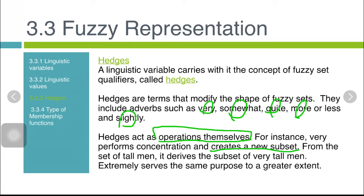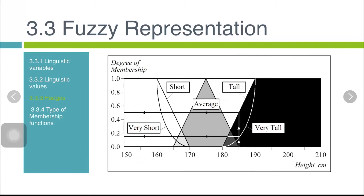From the set of tall men, we take an example. It derived another subset, that is 'very very tall men.' From the previous Figure 2 that we have drawn, we have short, average, and tall. If we consider hedges in the fuzzy concept, then we need to have another subset, that is 'very tall men.' Extremely serves the same purpose to a greater extent. This is when we apply hedges as another subset.